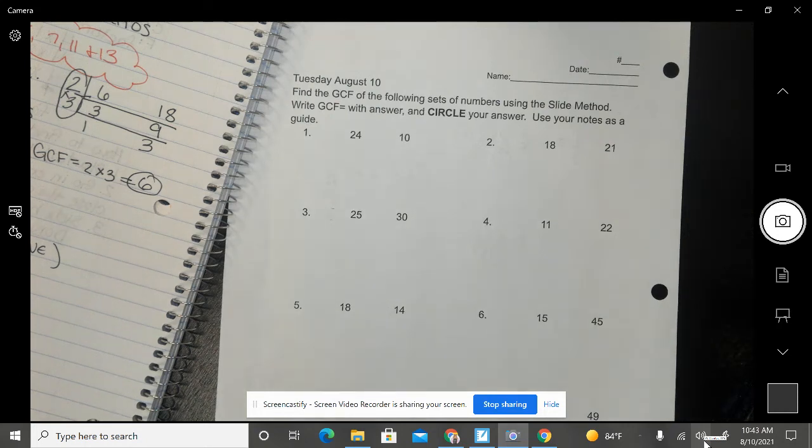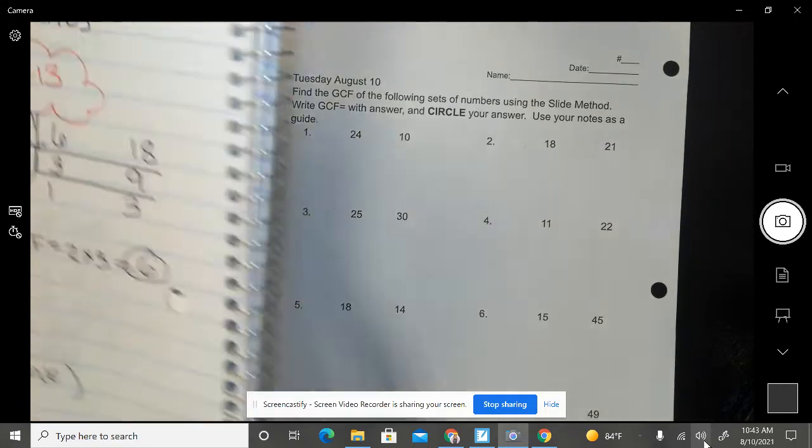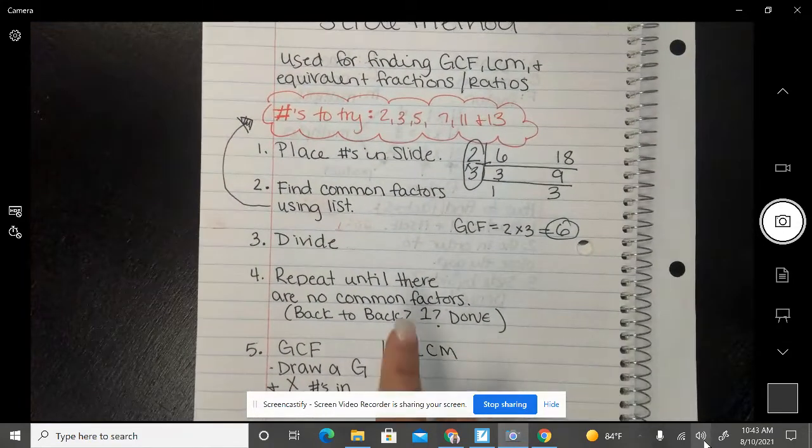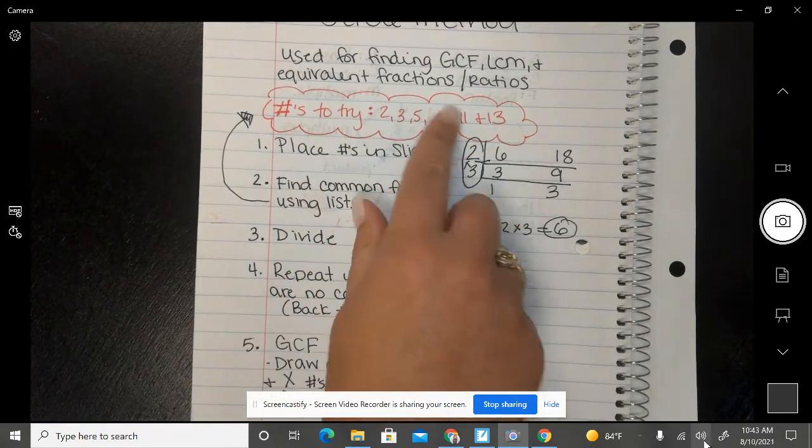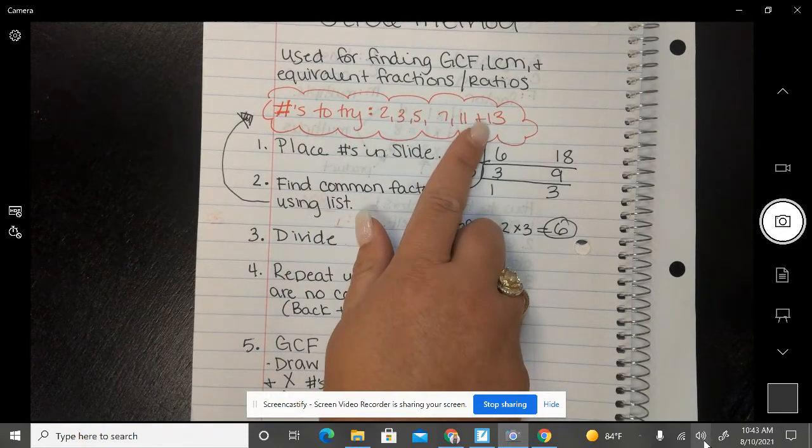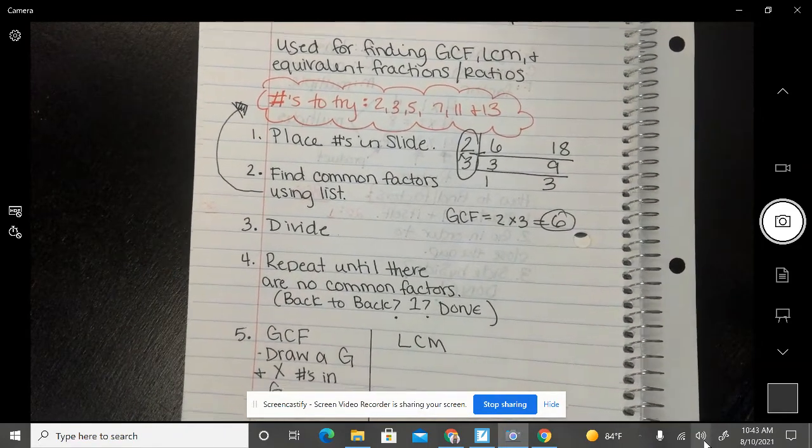For our homework tonight you are going to be finding the GCF using the slide method that we talked about in class. So if you're struggling with your homework, I'm going to suggest that you get your notes out from today because we're going to be following these five steps and you're also going to want this list of numbers here as well so that you can go back to those and refer to those as well.